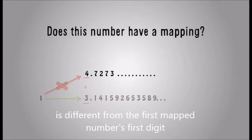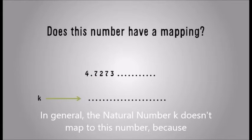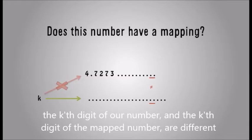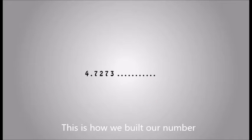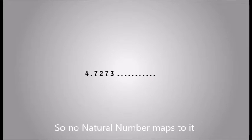map number's first digit. The same goes for the second digit because 6 doesn't equal 7 and so on. In general, the natural number k doesn't map to this number because the kth digit of our number and the kth digit of the map number are different. This is how we built our number. This number is different from every other map number, so no natural number maps to it.